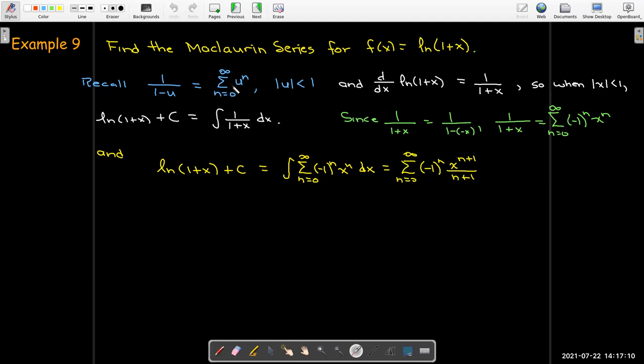And I'm left with finding the value of c. So here I just use the power rule when I integrated term by term. And since when x equals 0, natural log of 1 equals 0, I'm left with 0 plus c equals 0. So c equals 0. So we have a power series now for the natural log of 1 plus x.